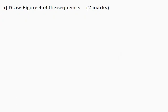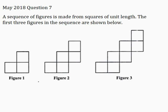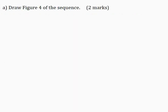Part A: Draw figure 4 of the sequence for two marks. Upon carefully observing figures 1, 2, and 3, you would notice that figure 2 is formed when we add two squares to figure 1, and figure 3 is formed when we add two squares to figure 2. Therefore, figure 4 will be formed when we add two squares to figure 3. I will now draw figure 4 of the sequence.